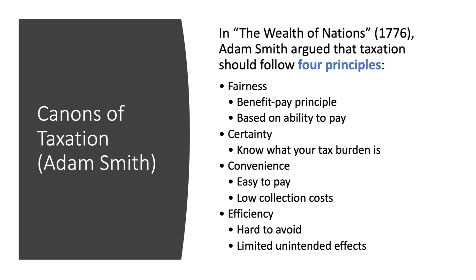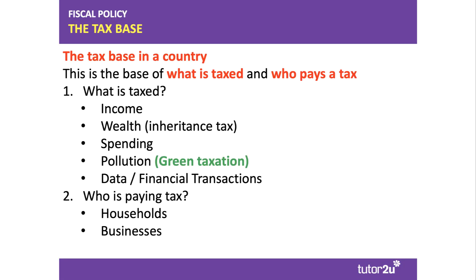Taxes often lead to unintended consequences and can be seen as a form of government failure. The tax base of a country is not widely understood, but essentially it asks two questions: what are we taxing, and who is paying the tax? Traditionally in the UK we have taxed income, wealth — including inheritance tax — and spending. But as time goes on we think of new things to tax. Pollution and climate change are right at the top of the agenda, and many governments are now broadening the base of so-called green taxes, including carbon taxation.